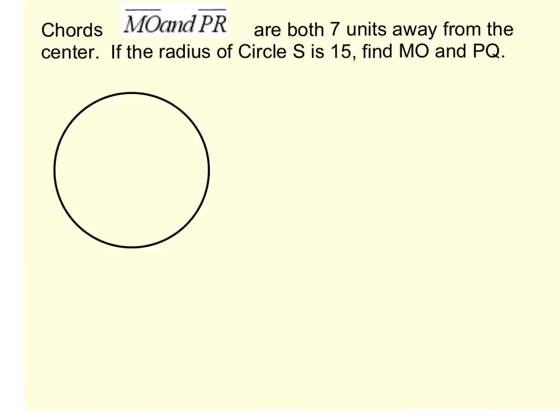So for this last example, we have a blank circle. What we're going to do is we're going to use all the information they give us, and we're going to draw our own picture. So we're going to start with chords MO and PR, and it says that those are both seven units away from the center. So I'm going to put where I think the center should go, and I'm just estimating here. And we know that this is an S. If I continue reading the question, it says the radius of circle S, so if this is circle S, then the center has to be S.